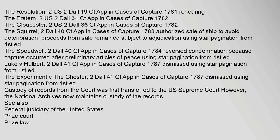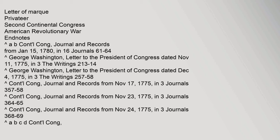Endnotes reference the Continental Congress Journals and Records from January 15, 1780 (in 16 Journals 61–64), and letters from George Washington to the President of Congress dated November 11, 1775 (in 3 The Writings 213–14) and December 4, 1775 (in 3 The Writings 257–58).